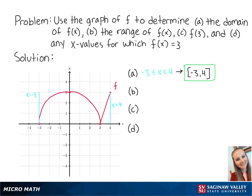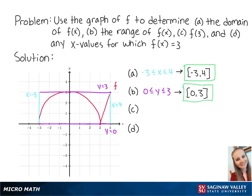For letter b, the range of f of x is the set of all y values within the function. Looking at the graph, we can see that the smallest value of y is 0 and the highest value of y is 3, so y is between 0 and 3. Since the range is inclusive on both endpoints, we write this as [0, 3].